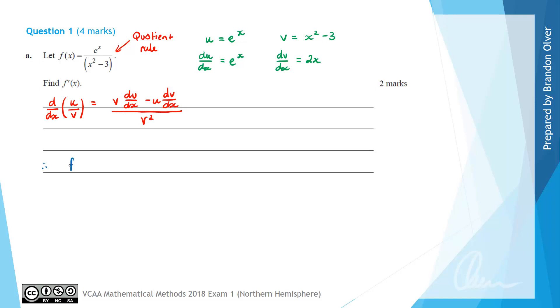Therefore, for this question we have the function f'(x) is going to equal v, which is x^2 - 3, times du/dx, which is e^x, minus u, which is e^x, times 2x, which we can write as 2x·e^x.